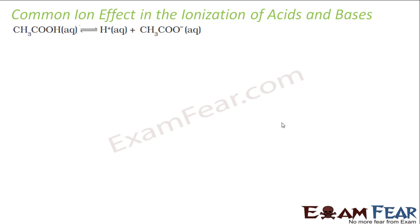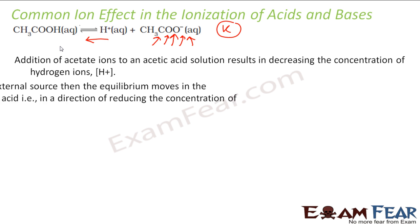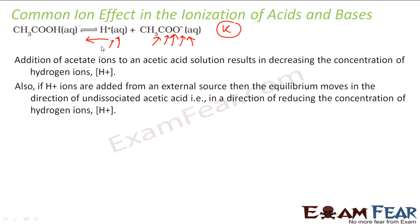When you add ions to an already ionized acid-base equilibrium, you are changing the concentration by adding ions. Let's suppose we add acetate ions — adding acetate ions to the equilibrium. According to Le Chatelier's principle, the stress of addition of acetate ions will be released only when the reaction moves in the reverse direction. So the reaction moves in that direction, and the H+ ions are also consumed, so the concentration of H+ ions goes down.